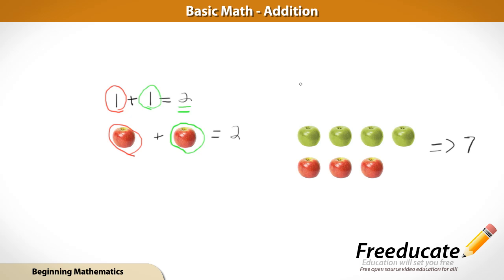So the equation that the problem would look like this. It would look four green apples plus three red apples. That equals seven apples.